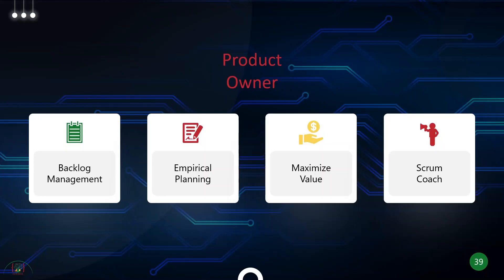What the Scrum Master does is own the process on behalf of the development team, while the Product Owner owns the value on behalf of the organization and the stakeholders. The Product Owner is completely accountable for the Product Backlog. Product Backlog refinement, or grooming, is their responsibility.